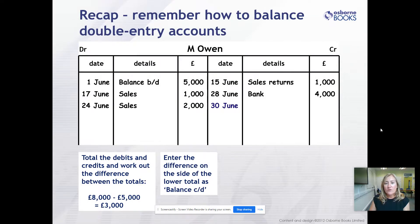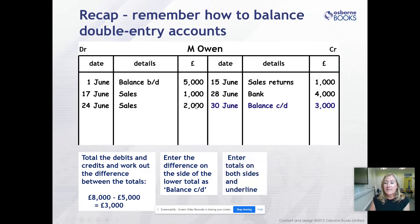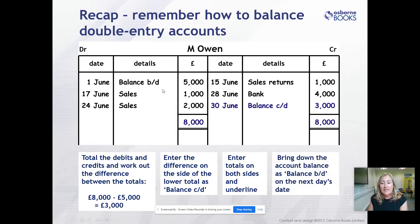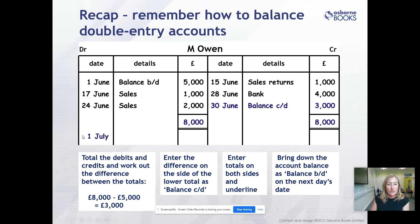A reminder of how to balance the T-accounts: make sure you add up the debits and add up the credits. Write the totals off to one side while you work out the difference, then plug the gap to make sure both sides add up to the same amount. In the M. Owen account, £8,000 on each side. We credit it out of June - it's a debit balance overall, but to remove it from June we credit June's T-account, then bring it down on 1st of July as a debit of £3,000.